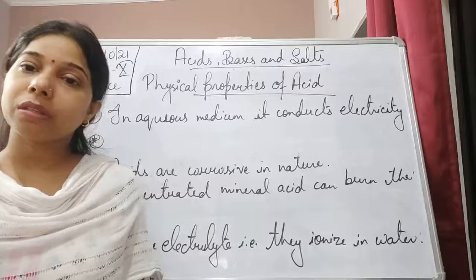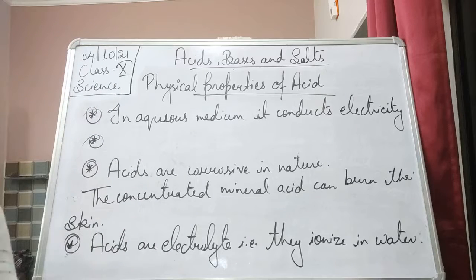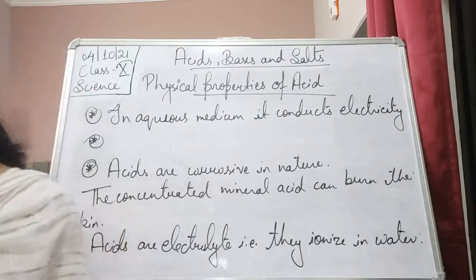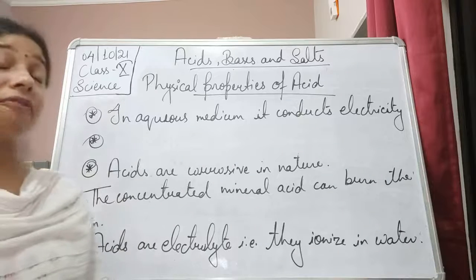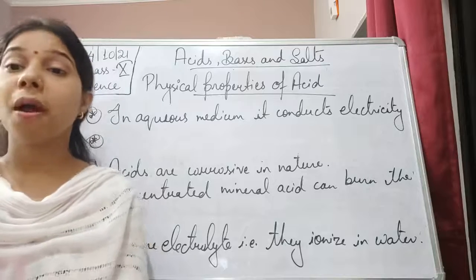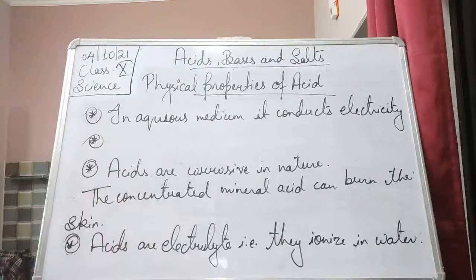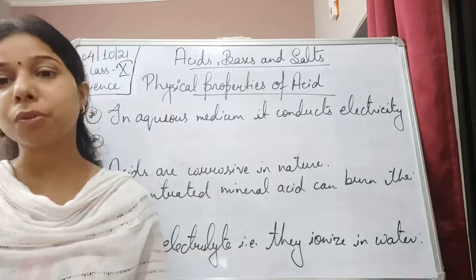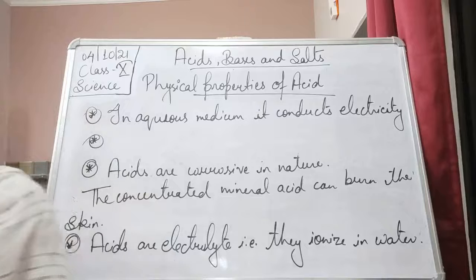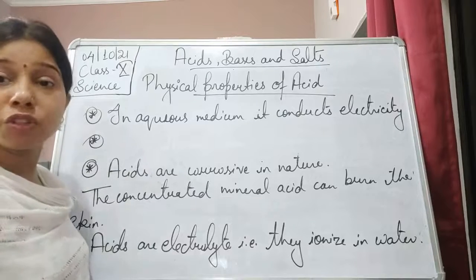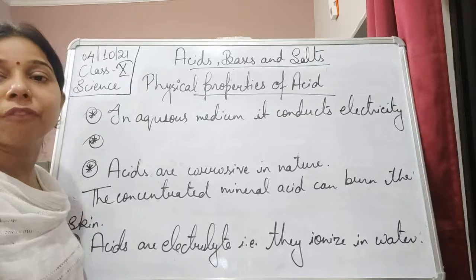Sulfuric acid is used in car batteries. It is also used in fertilizers — for example, ammonium sulfate is a fertilizer prepared using sulfuric acid. It is also used in the manufacture of other chemicals like nitric acid and hydrochloric acid. Sulfuric acid is also used in making synthetic fiber, detergent, and paints.